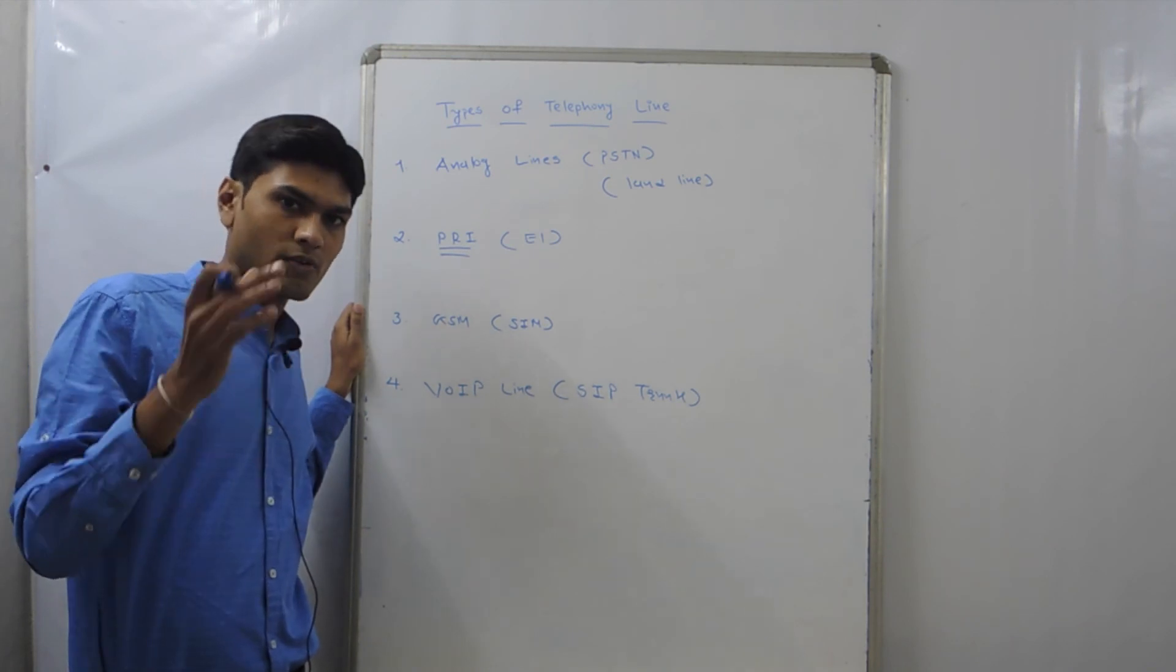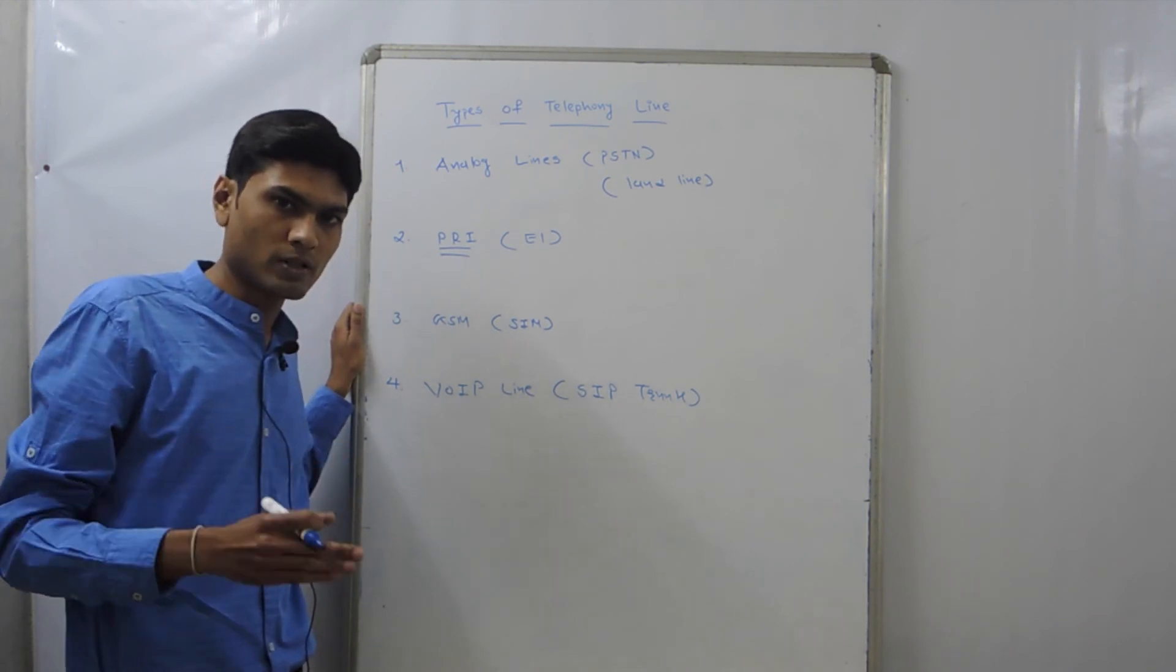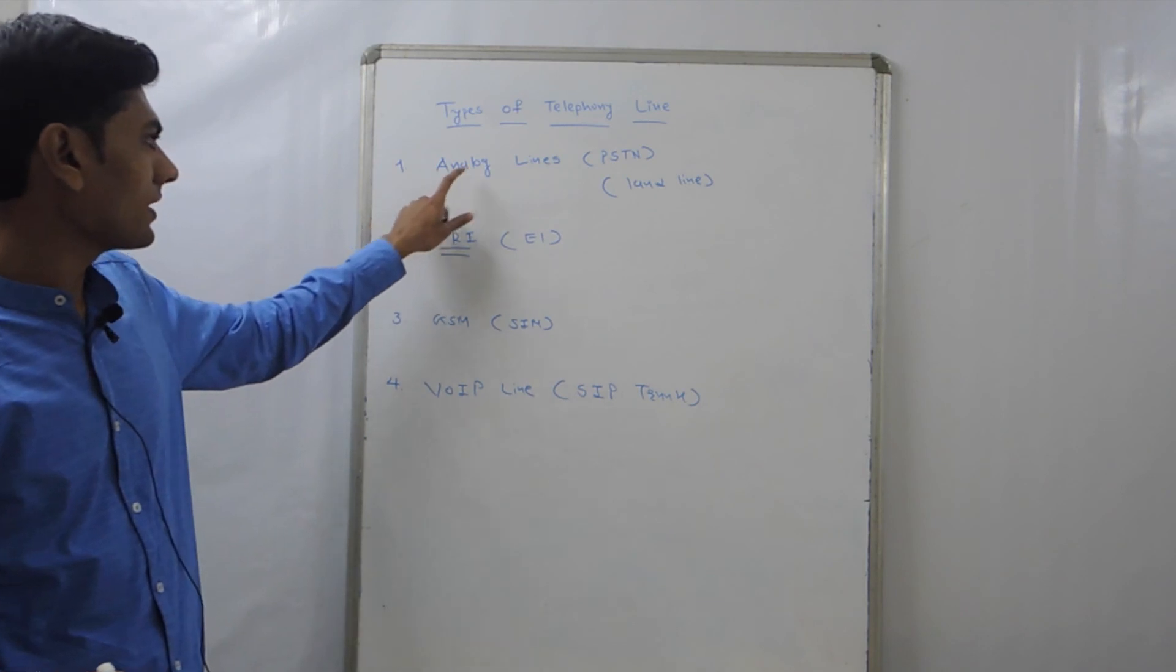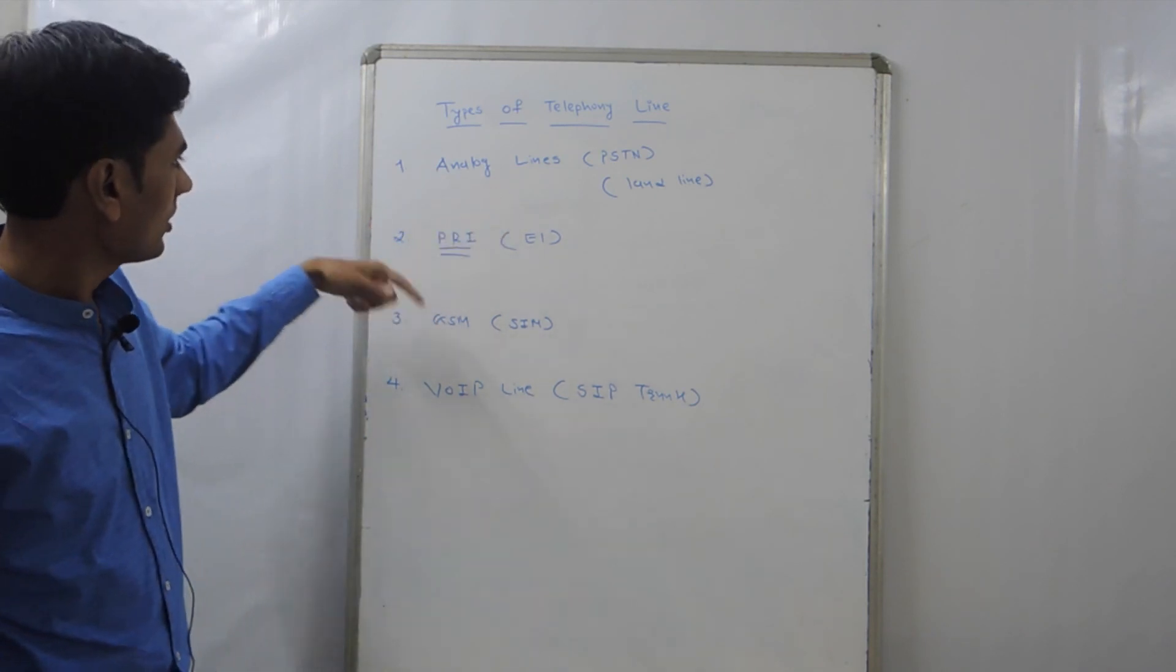So suppose in your company you want five simultaneous calls to happen, so you need to take five analog lines. This is old analog lines.